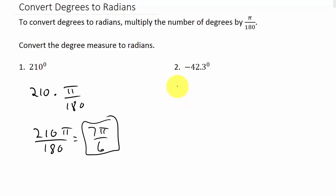Let's go ahead and take a look at this. So I take my degrees, negative 42.3, and I'm going to multiply by pi over 180.